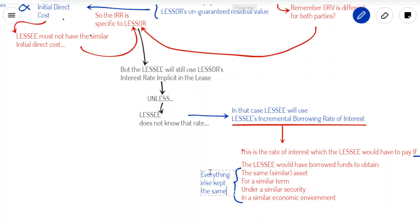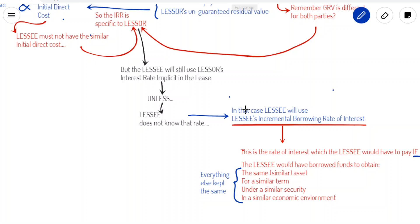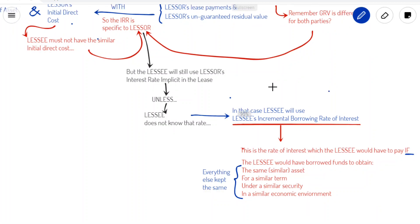To be short, it is the interest that would be charged to the lessee if the lessee had actually borrowed the funds from somewhere else to purchase that asset — not just anywhere else, but also in a similar environment, under similar security, to get a similar value of asset and for a similar term. There should be nothing different when computing this hypothetical rate; it is the rate the lessee would have to pay if taking an exactly similar loan from somewhere else.